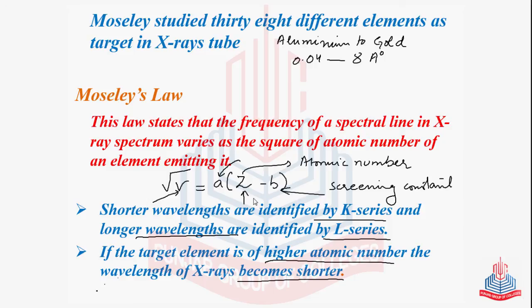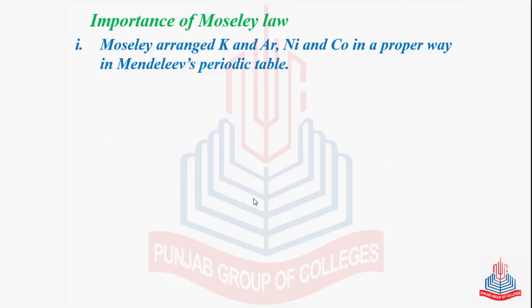Remember that these properties are not based on the atomic masses. They are based on the atomic number. Discussing the importance of Moseley's law, Moseley arranged many elements in a proper way in Mendeleev's periodic table, such as potassium and argon, nickel and cobalt, tellurium and iodine. We have proved by Moseley's law that the main characteristic of an element is its atomic number, not its atomic mass.